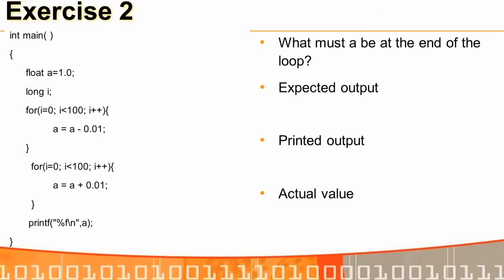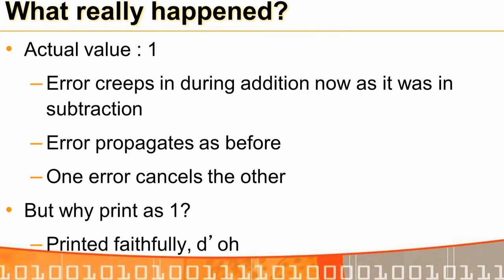Experiment 2: start with A=1, subtract 0.01 one hundred times, then add 0.01 one hundred times. The expected output is 1. The printed output is 1, and the actual stored value is also 1. The error in subtraction was compensated by the error in addition — two negatives made a positive.